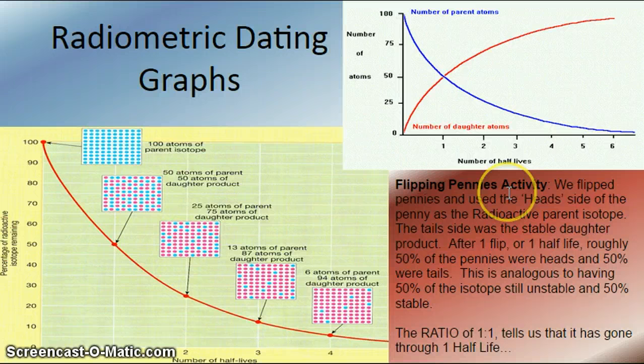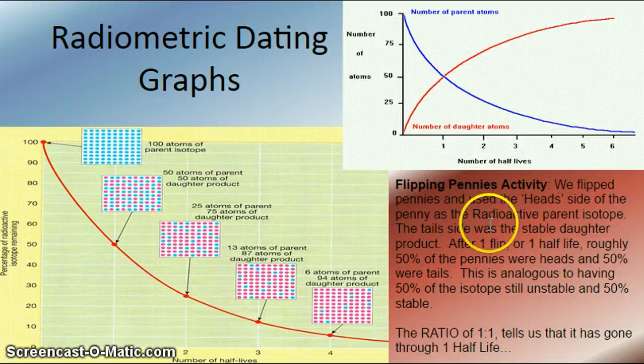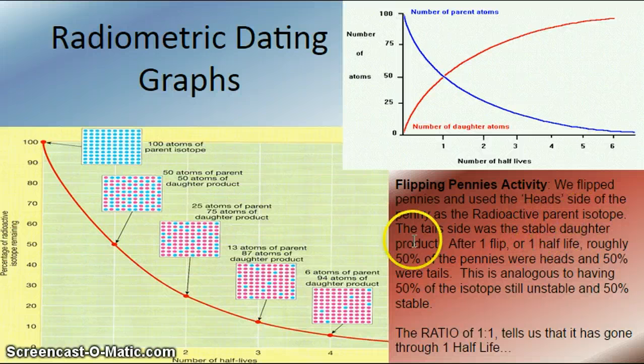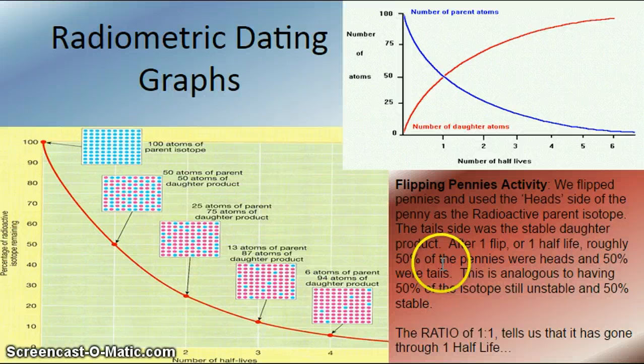So let's take a look at this, and let's apply this to our flipping pennies activity. We flip pennies and use the head side of the penny as the radioactive parent isotope. So the tail side we call stable daughter product. So after one flip, or one half-life, roughly 50% of the pennies were heads, and 50% were tails.